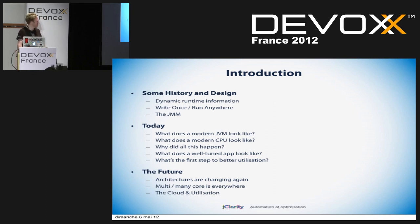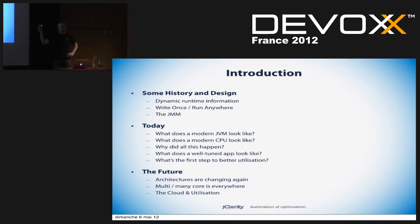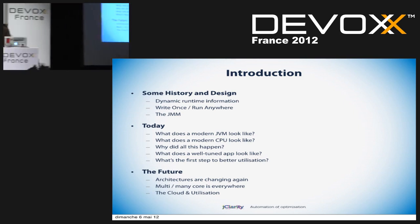One thing we're going to come back to again and again is this: this thing is more powerful than the computer that sent the space shuttle up in the 60s. So why is it we need to have eight-core machines to run a small Java payroll app which serves 10 users? That's one to ponder — we'll come back to that.